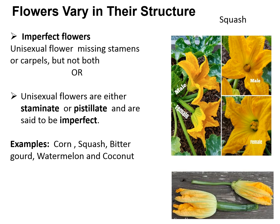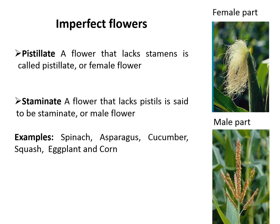Regarding imperfect flowers, a flower that is missing either male or female parts is called an imperfect flower. Unisexual flowers are either staminate or pistillate and are said to be imperfect. Remember, imperfect flowers are always incomplete — for example, corn, squash, watermelon, and coconut. Pistillate flowers are those that lack stamens, meaning the male part, and are called pistillate or female flowers. Staminate flowers are those that lack pistil. Examples include squash, asparagus, cucumber, eggplant, and corn.